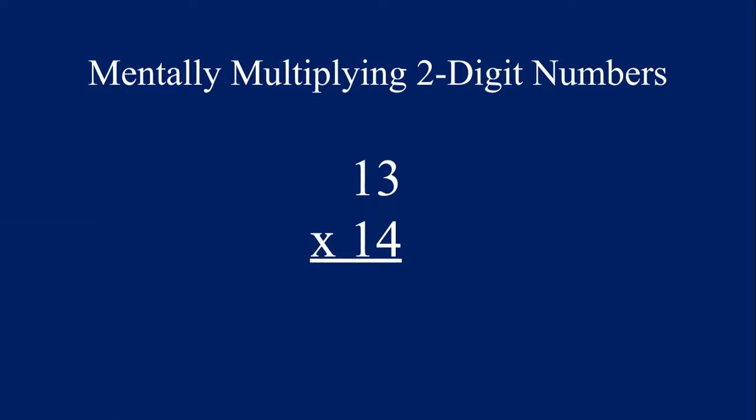I can tell you that the answer to this equation — I think it is 182. Let's go through and work the equation out the traditional way first, and then I'll teach you the strategy that I just used to solve it in my head, and we'll check to see if I'm correct. Is the answer 182? Let's see.